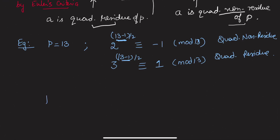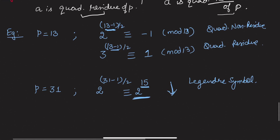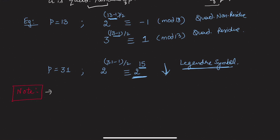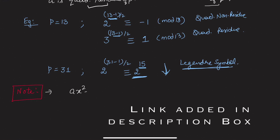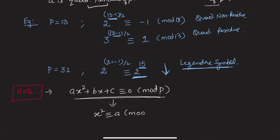The difficulty in applying Euler's criteria is that for larger primes, say p = 31, checking whether 2 is a quadratic residue requires computing 2^15, which is a large calculation. To reduce this computational burden, we introduce the Legendre symbol, which will be covered in the next video.